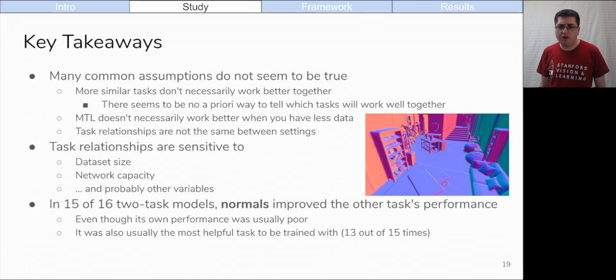So what have we learned? First off, many common assumptions about multi-task learning do not seem to be true. More similar tasks don't necessarily work better together. In fact, there seems to be no a priori way to tell which tasks will work well together and which tasks won't. Multi-task learning doesn't necessarily work better when you have less data. Task relationships change significantly in different settings. They are sensitive to data set size and network capacity at least. Finally, the normals task seems to be a great one to train with if you want to improve performance on another task. In 15 out of 16 of the models that were trained with normals, the other task sees a benefit. Furthermore, this benefit was higher than the benefit of training with any other task 13 out of 15 times. This may be because normals have uniform values across surfaces and perform 3D edges. However, the normals task itself tends to have poor performance when paired with another task. We see that which tasks are learned together is critical for achieving good performance.